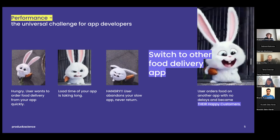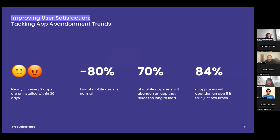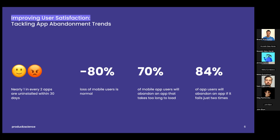Let's take a look at some data. According to AppsFlyer, a marketing and analytics platform for mobile, nearly half of all apps are uninstalled within the first 30 days. A study also suggests that losing 80% of mobile users is common, especially for popular apps. App abandonment is often due to a bad experience, especially slow performance and unreliability. A report found that 70% of mobile app users will abandon an app if it takes too long to load, and 84% will abandon an app after just two failures.